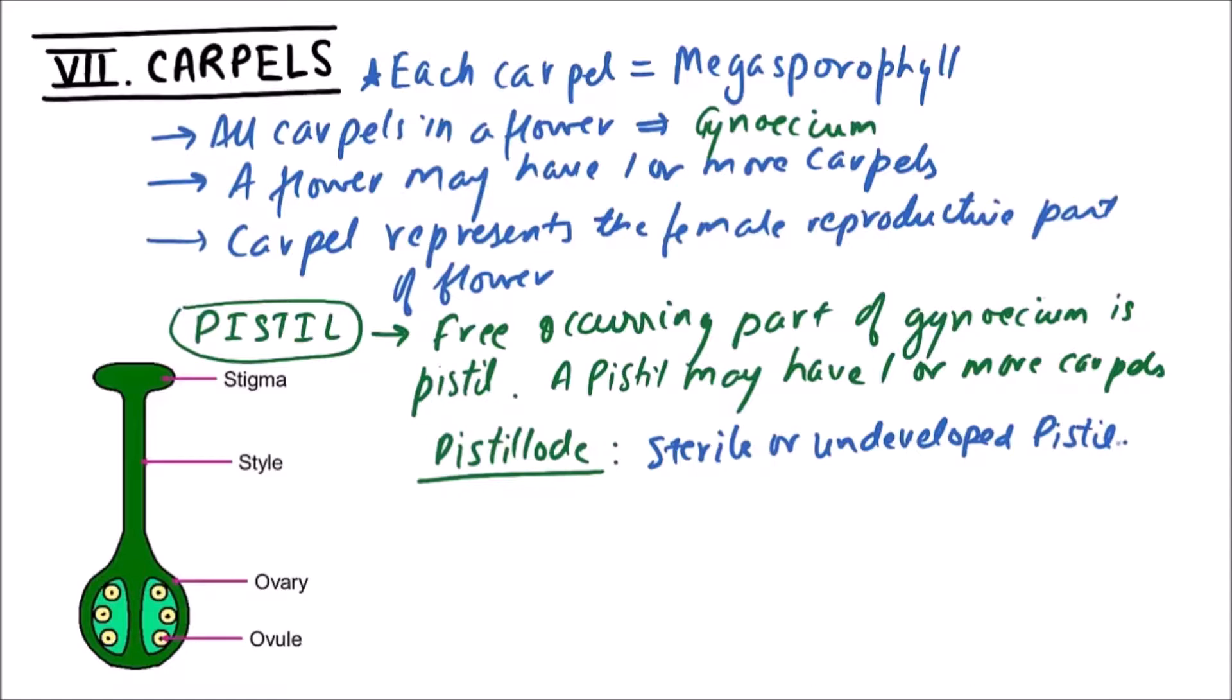A typical carpel consists of three regions. First one is Stigma, second is Style, and third one is Ovary which contains ovules. These three structures constitute one carpel.